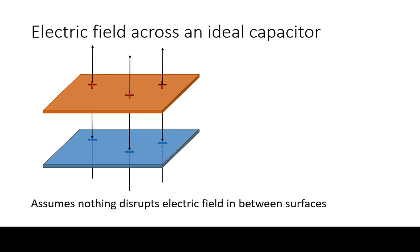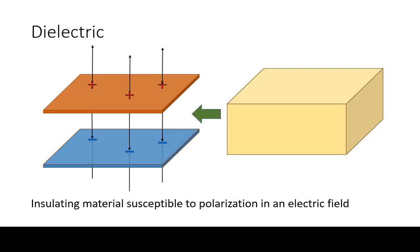This of course assumes that nothing significant disrupts the electric field in between the surfaces. A dielectric is an insulating material that is susceptible to polarization in an electric field.